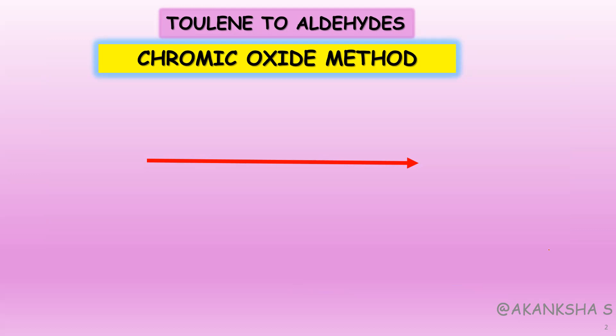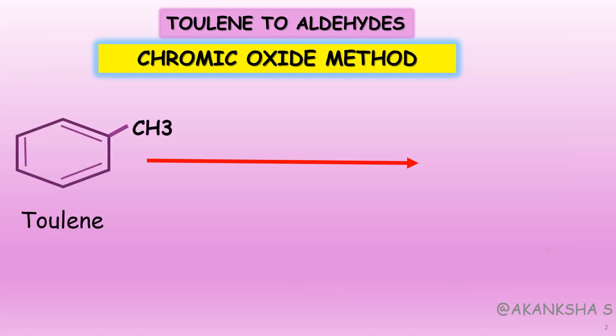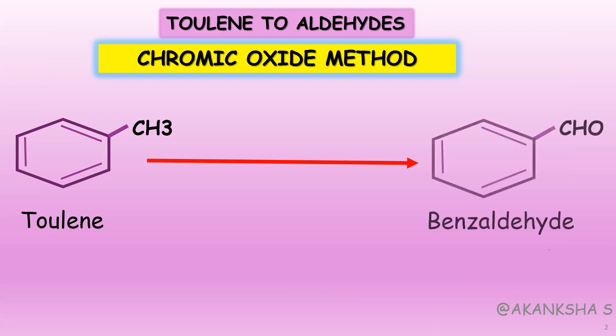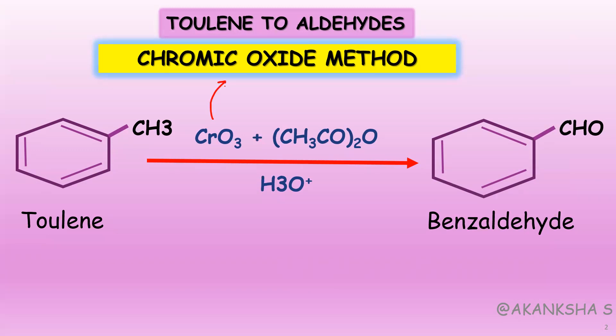This is a very simple reaction technically, but many students get confused about how reagents are moving within the reaction. Let's understand how using the chromium oxide method we can convert toluene to an aldehyde. Toluene is methylbenzene — you just have a CH3 group attached to benzene. Methylbenzene is the IUPAC name; toluene is the common name. We get benzaldehyde out of this. One might say you just remove two hydrogens and substitute with oxygen, but it's not that simple. We use three agents: chromium oxide, and famously, acetic anhydride.